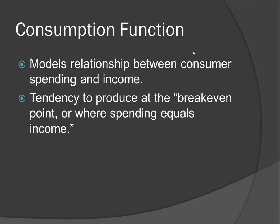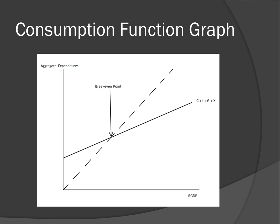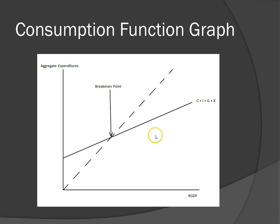Another graph to remember is called the consumption function, which models spending and income. At equilibrium, an economy will be exactly at the break-even point, where the economy will spend exactly the amount it earns. The y-axis is equal to spending and the x-axis is equal to GDP, or income. The dotted line is a 45-degree line, which means that any point on it equals $1 spent for every dollar earned. The consumption function is shown with a smaller slope, so that it's higher initially and lower after the break-even point. The higher points show that with low money, people will spend more than they earn, and past the break-even point, people will spend less than they earn, meaning they are saving.